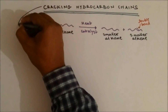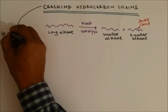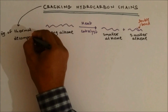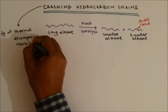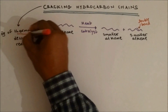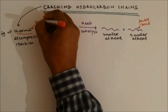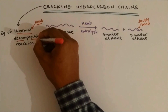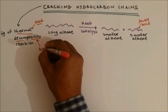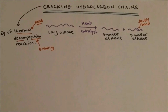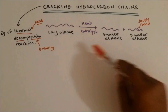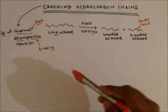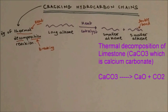Cracking is an example of thermal decomposition reaction. Thermal means heat and decomposition means breaking. So cracking is an example of thermal decomposition because the long hydrocarbon chains are broken down into smaller ones using heat. Another well-known example of thermal decomposition would be breaking calcium carbonate into calcium oxide and carbon dioxide.